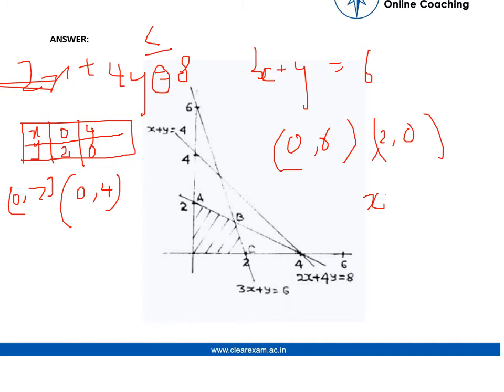The last condition was x plus y equals to 4. So here when x is equals to 0, y is equals to 4.